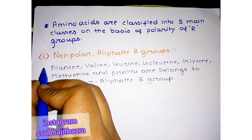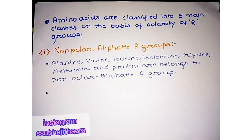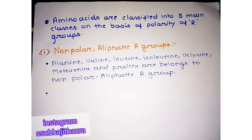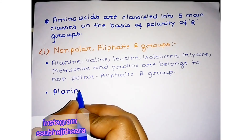Alanine, valine, leucine, and isoleucine are present inside proteins and these types of amino acids stabilize protein structures by means of hydrophobic interaction. Hydrophobic interaction is a very important interaction in the stabilization of proteins, and it is contributed by these amino acids that belong to the nonpolar aliphatic R group.